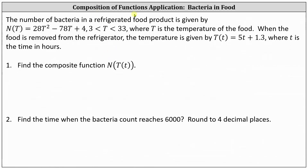Welcome to an application of composition of functions. The number of bacteria in a refrigerated food product is given by n(T) equals 25 times T squared minus 78T plus 4, where T is greater than 3 and less than 33, and T is the temperature of the food. When the food is removed from the refrigerator, the temperature is given by T(t) equals 5t plus 1.3, where t is the time in hours.